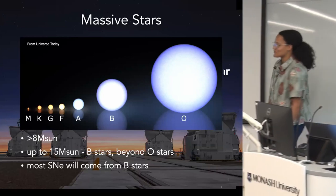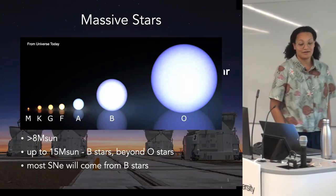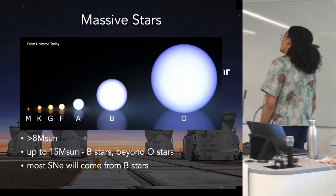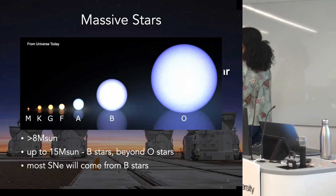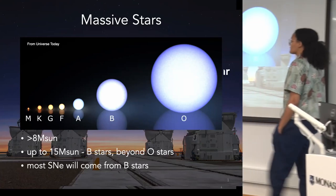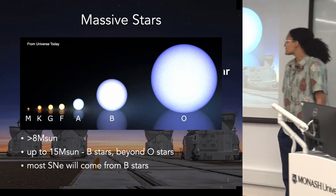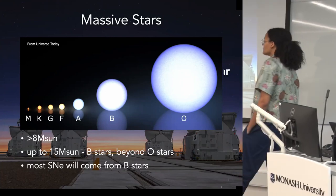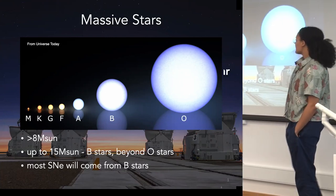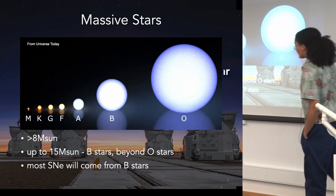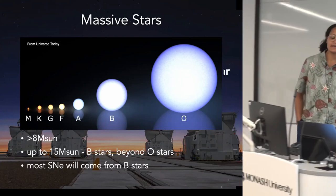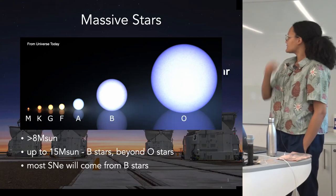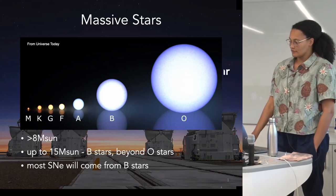We already had a fantastic introduction to massive stars earlier today. When I'm talking about massive stars, I'm talking about anything larger than eight solar masses. Up to 15 solar masses, I'm considering B stars, and beyond that, we're talking about O stars. Most of the supernovae we will look at will come from B stars, and neutron stars also come from the B star end.